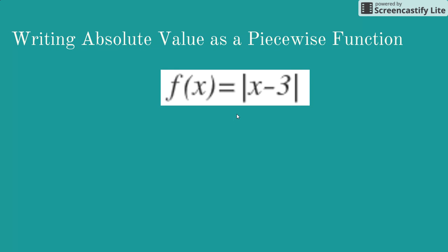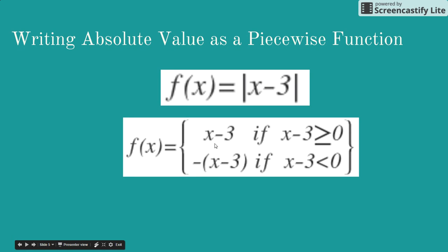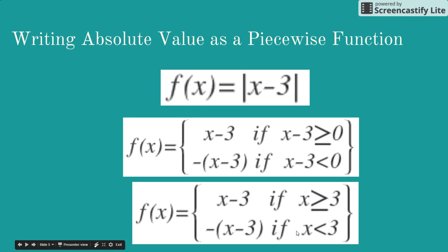Next we look at the absolute value of (x − 3). The first thing to do is set it equal to zero — what value makes this zero? That's x = 3. For the piecewise function: when x − 3 is positive (x ≥ 3), you leave the function as x − 3. When x − 3 is less than zero (x < 3), you negate the input, so you get −(x − 3), which can also be written as −x + 3.